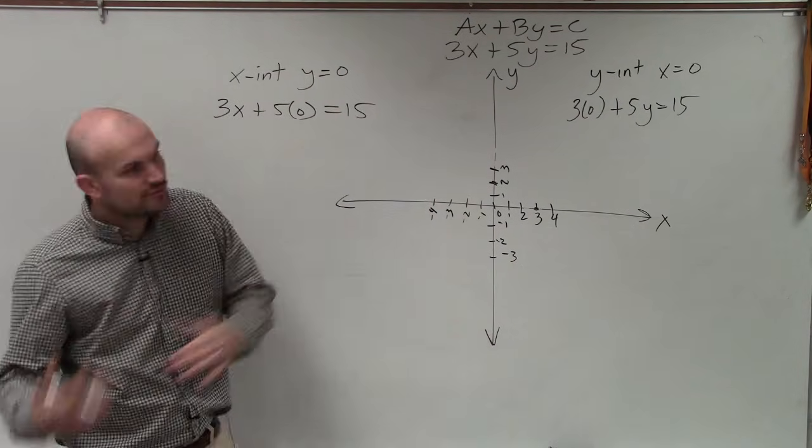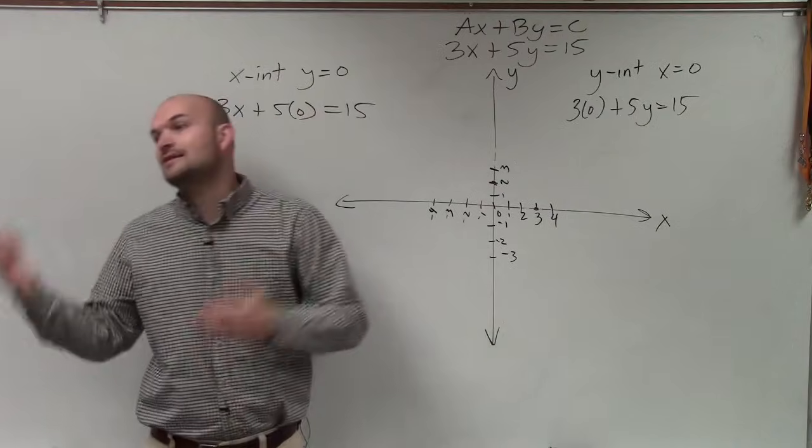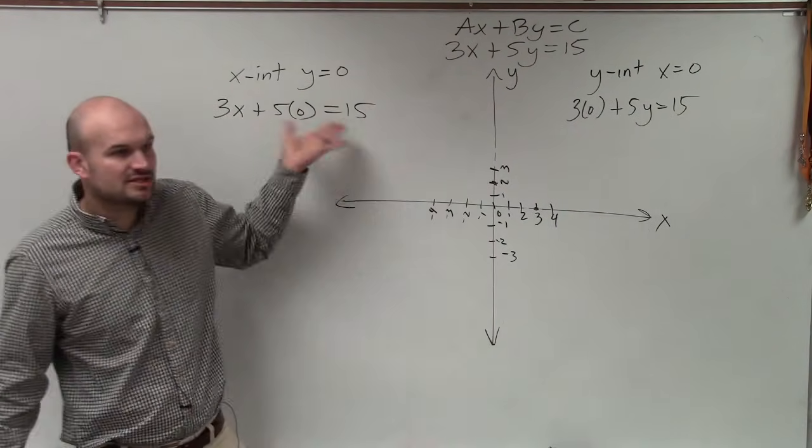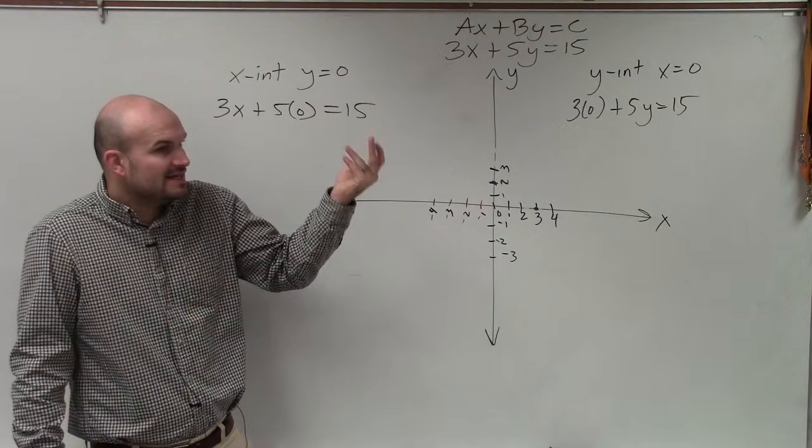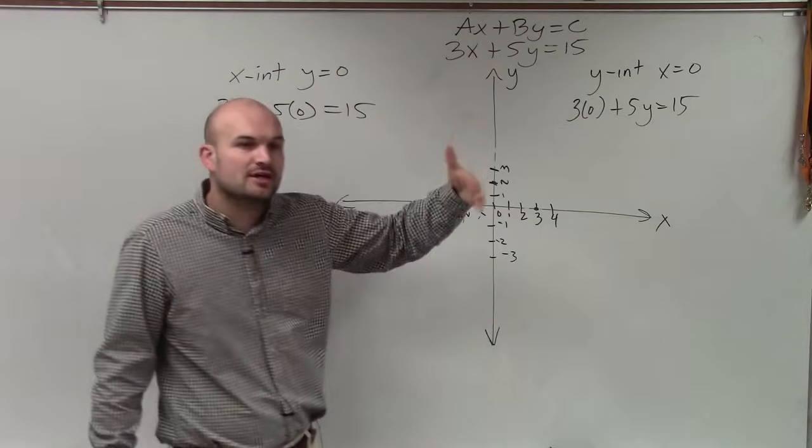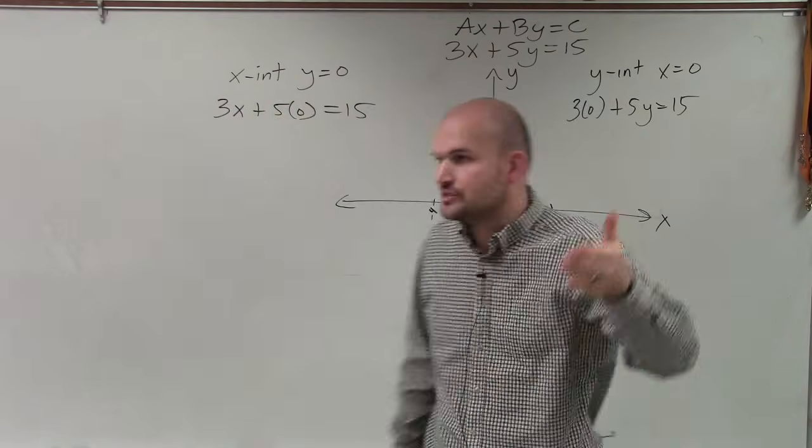Because now, rather than having to rewrite it in slope-intercept form, plot the y-intercept, and use the slope, if you understand the definition, all we need is two points. And the easiest two points usually to find on a line are the intercepts, because we know that one of the other values has to be 0.